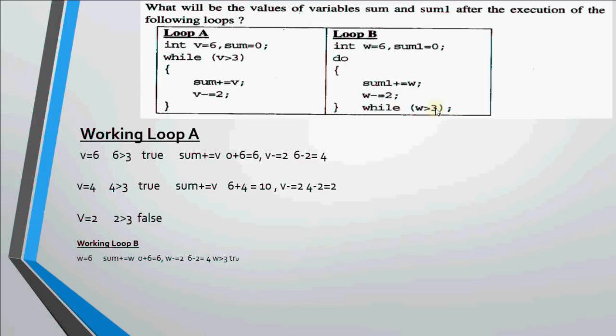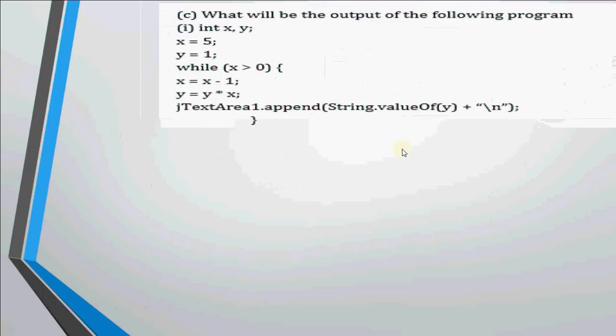Then w is decreased by 2. We get 4. And the first condition is 4 greater than 3. Yes, it is true. We'll go up here again and enter into the loop. When we enter into the loop, this time sum1 was already 6. w is 4. So 6 plus 4 gives me 10. Then w is decreased by 2 becomes 2. 2 greater than 3 is false. We stop here. Thus the value of sum1 is also 10. So in this case, loop a gives me 10 in sum and loop b gives me 10 in sum1. So that's how we execute the loops and get the output.